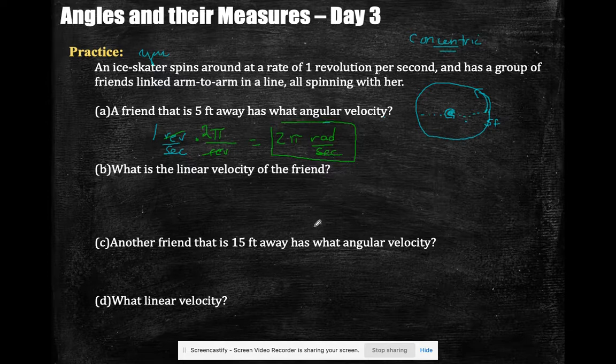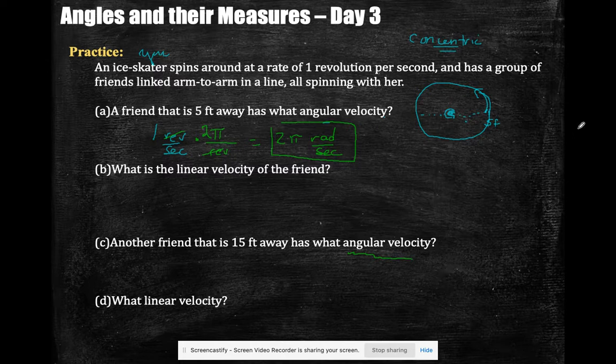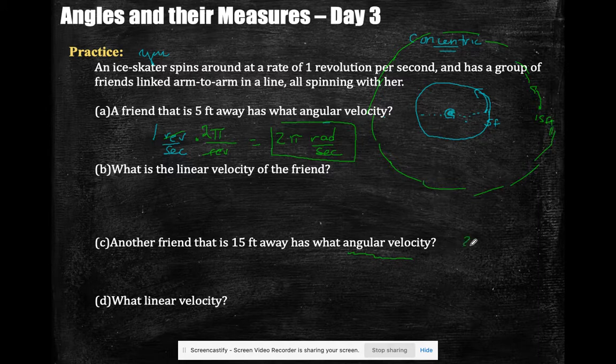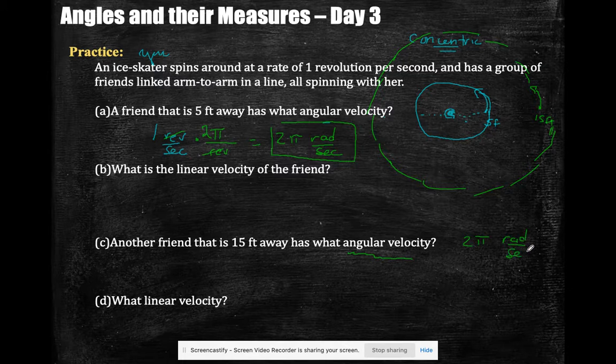And then I noticed down here that they're asking me for the angular velocity of another friend that's over here at 15 feet. But that's another concentric circle, isn't it? And what's true about the concentric circle?